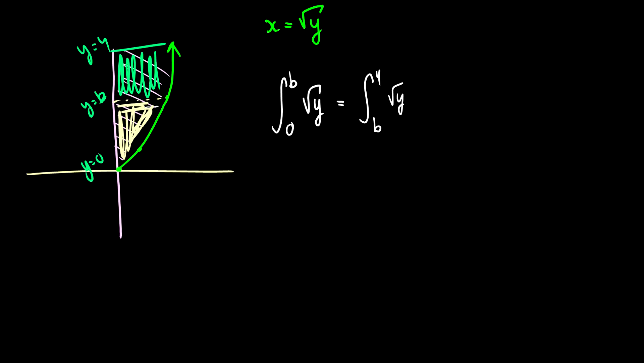So the anti-derivative of the square root of y is just y to the 3 halves over 3 halves and this will be from b to 0. And this will be equal to y to the 3 halves over 3 halves from 4 to b or from b to 4.